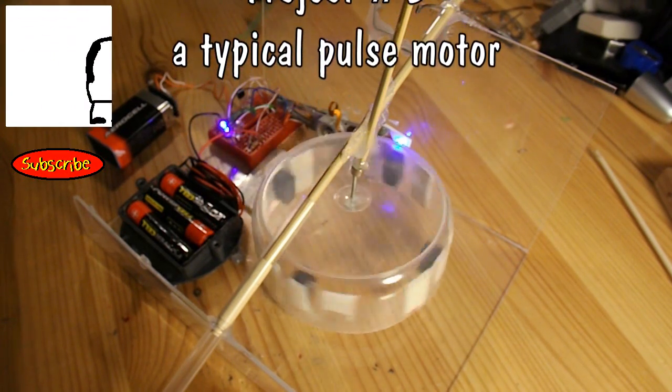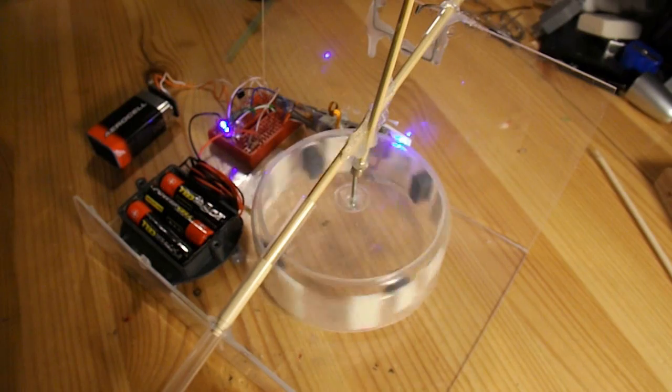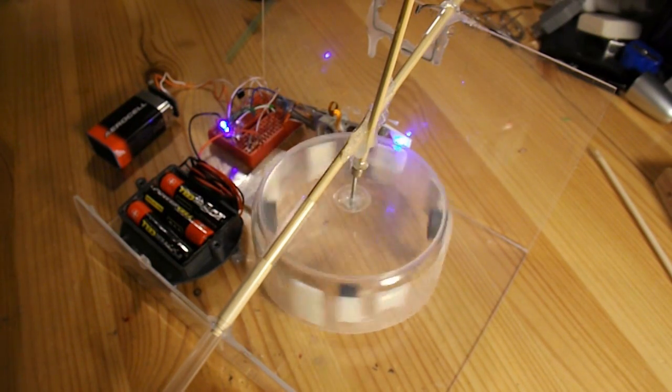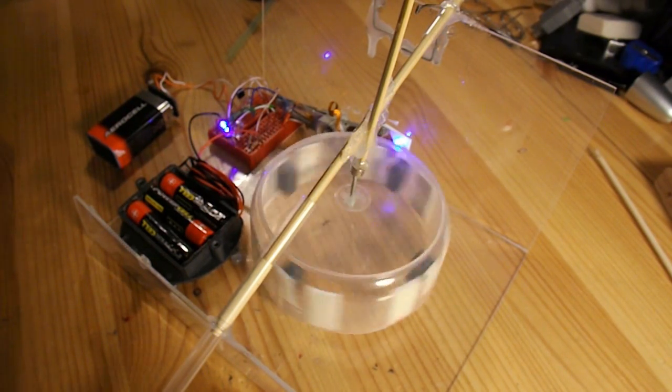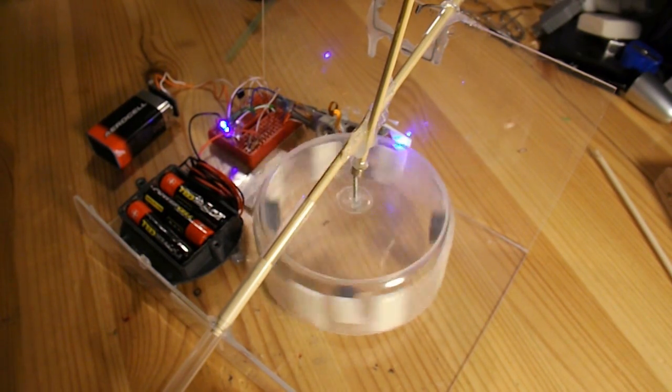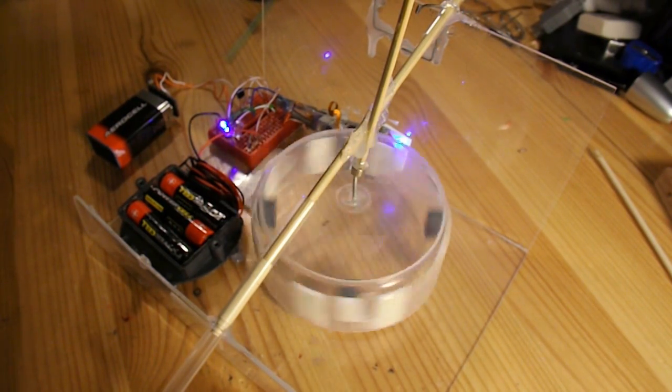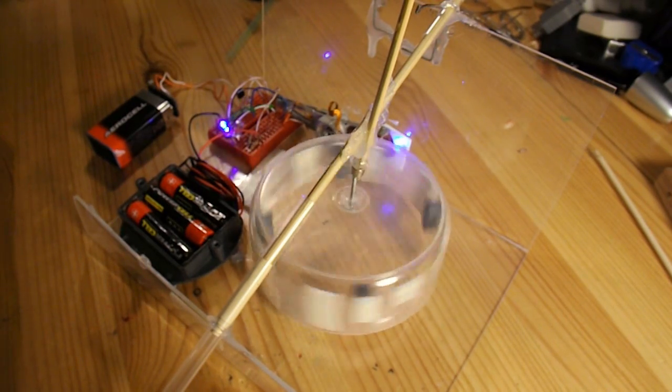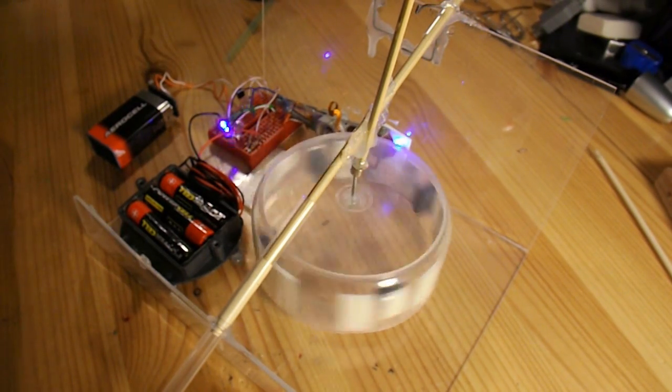Hi guys, just using that Hall Effect sensor and the hard drive coil, or hard drive actuator arm coil, in the sort of way that you normally see these things on YouTube, running a pulse motor.